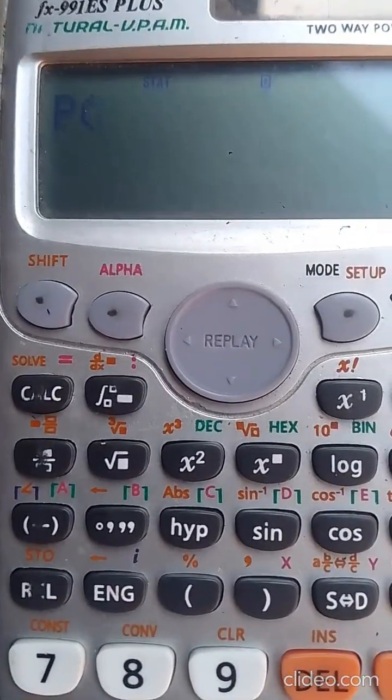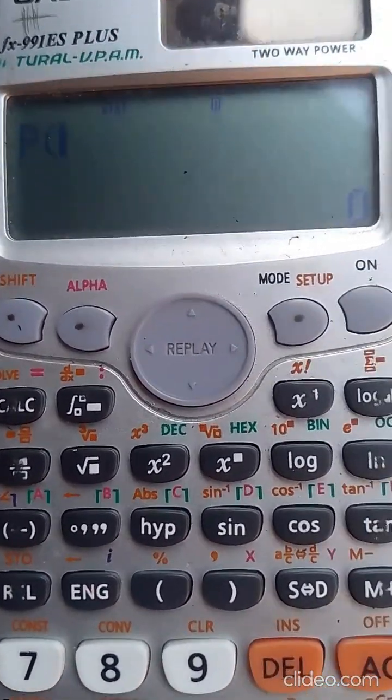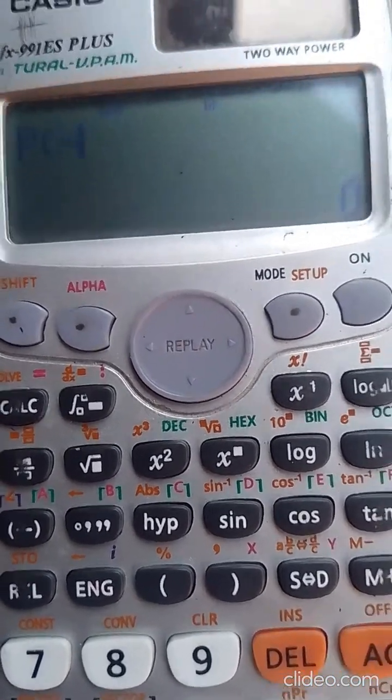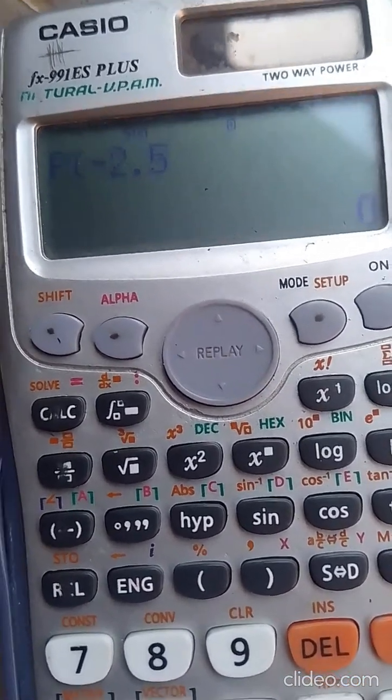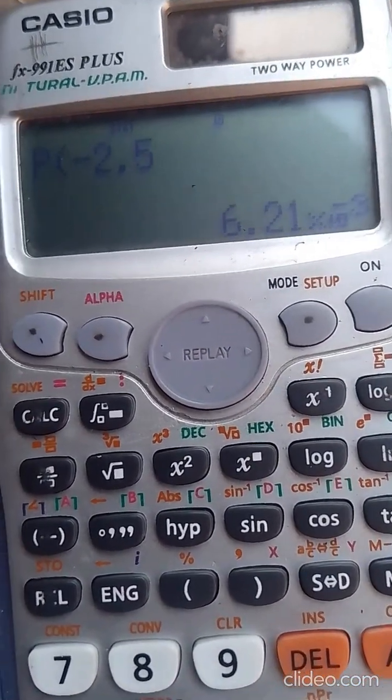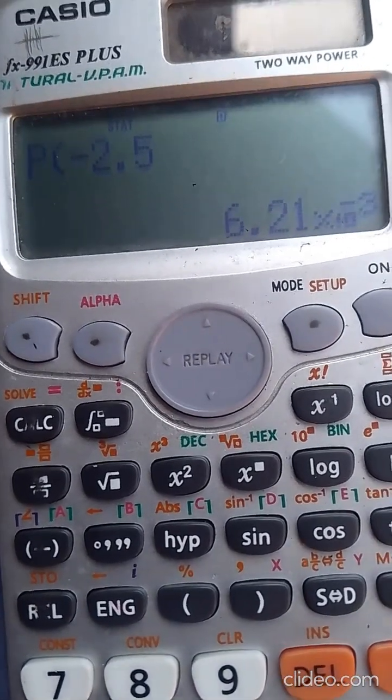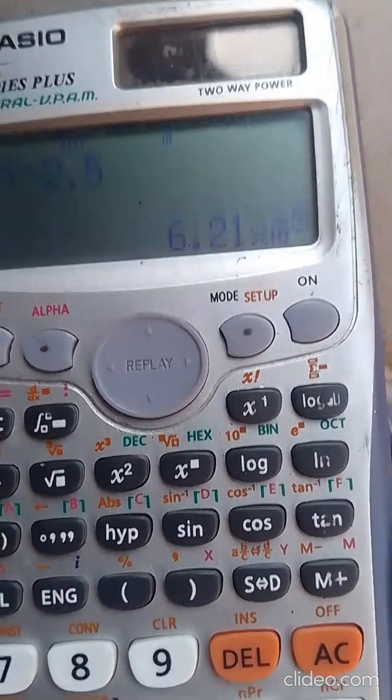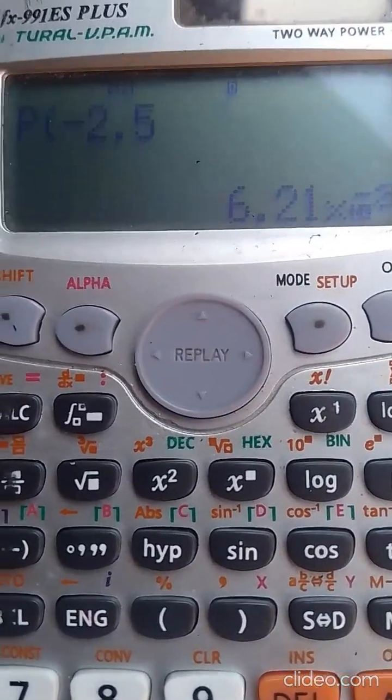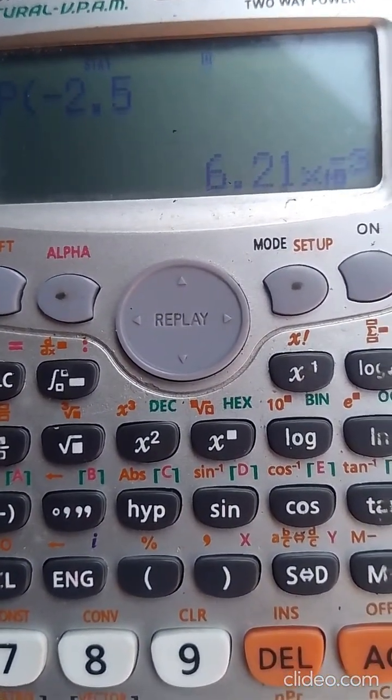So it's asking me for the value that I want to use. Assuming I want to compute -2.5. Then you don't need to close the bracket, just press equals. It will give me the answer. So this is the p-value, which is 0.00621. Watch it again if you don't get it.